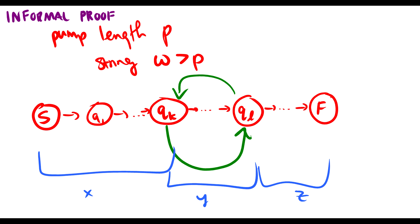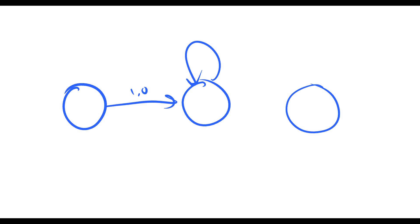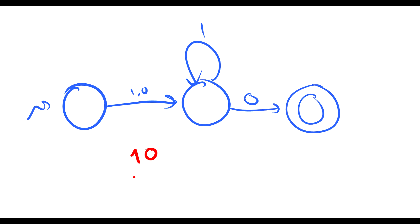A quick example: let's say we have three states — a one or zero goes to a middle state, we can take as many ones as we want, and then a zero ends up in the final state. This machine accepts the string one-zero, one-one-zero, one-one-one-zero, and so on. We can see that if we take the one, we can pump it up or pump it down, and it's still in our language and still accepted by the machine.